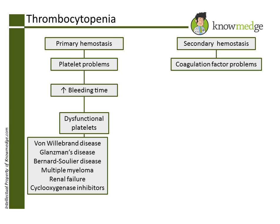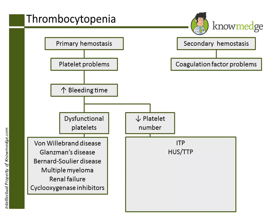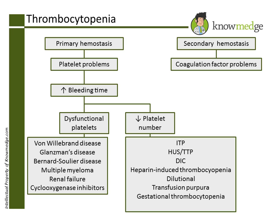Some examples of problems that decrease platelets are ITP, HUS, DIC, heparin-induced thrombocytopenia, dilutional, transfusion purpura, gestational thrombocytopenia, and EDTA. Choice C, EDTA, is the correct answer.